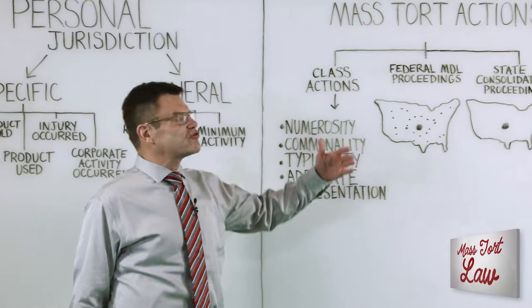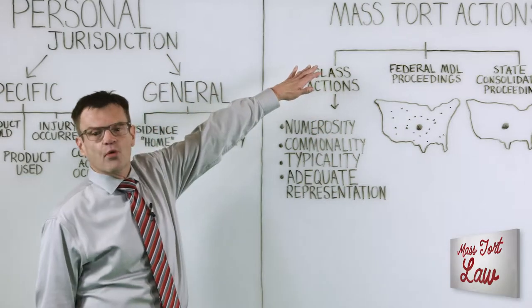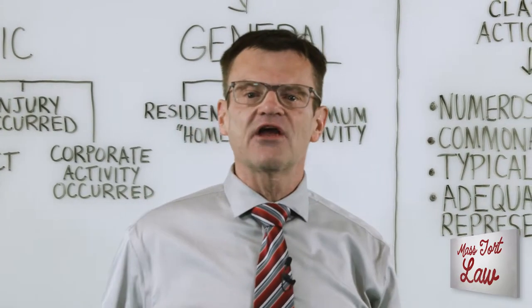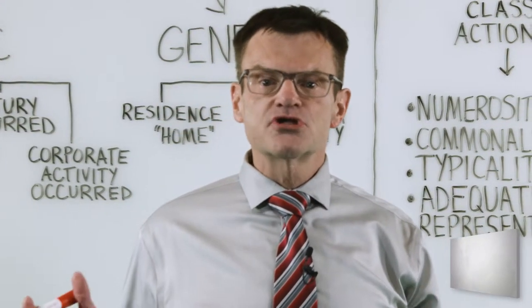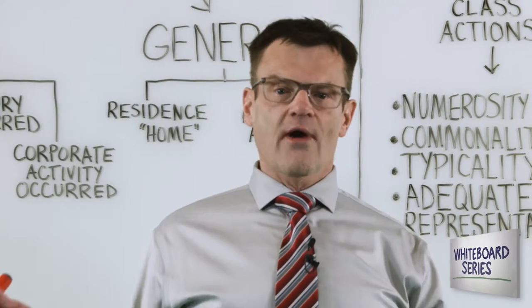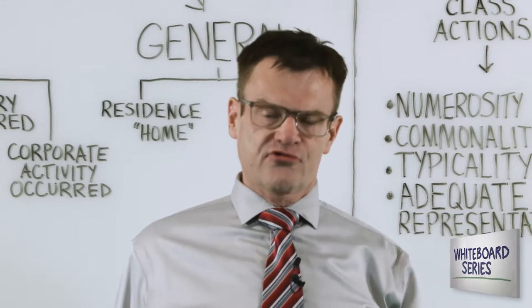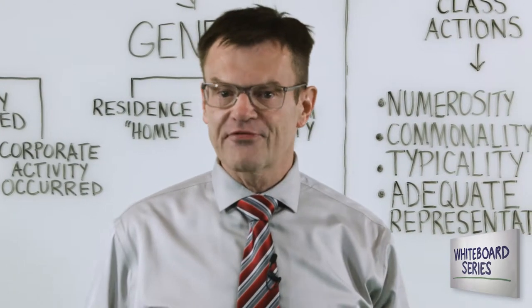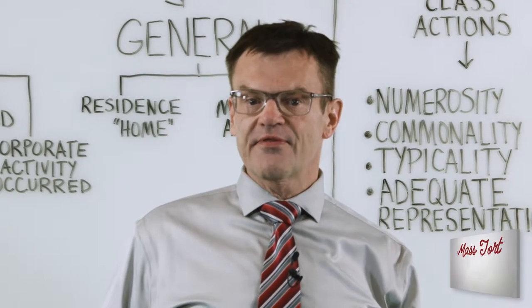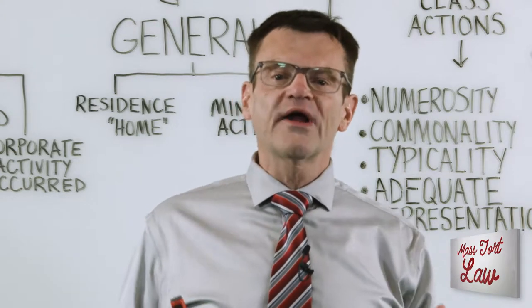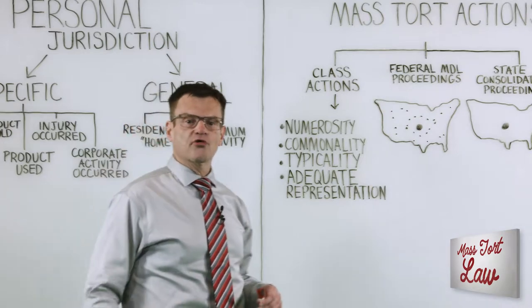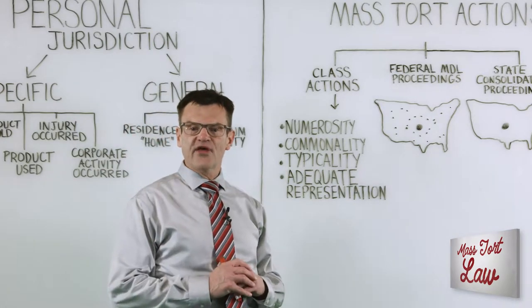Before discussing that, I need to talk to you about the types of mass tort actions that exist. A mass tort action is any kind of litigation that involves a large number of people suing over essentially the same thing. For instance, there may be an airline crash that involves 200 injured victims, and all 200 of them are suing about the same crash. Or there may be a drug that was released that has injured several thousand people. Those are what we call mass tort actions because the lawsuits brought by those individuals will all essentially be dealing with the same subject matter.